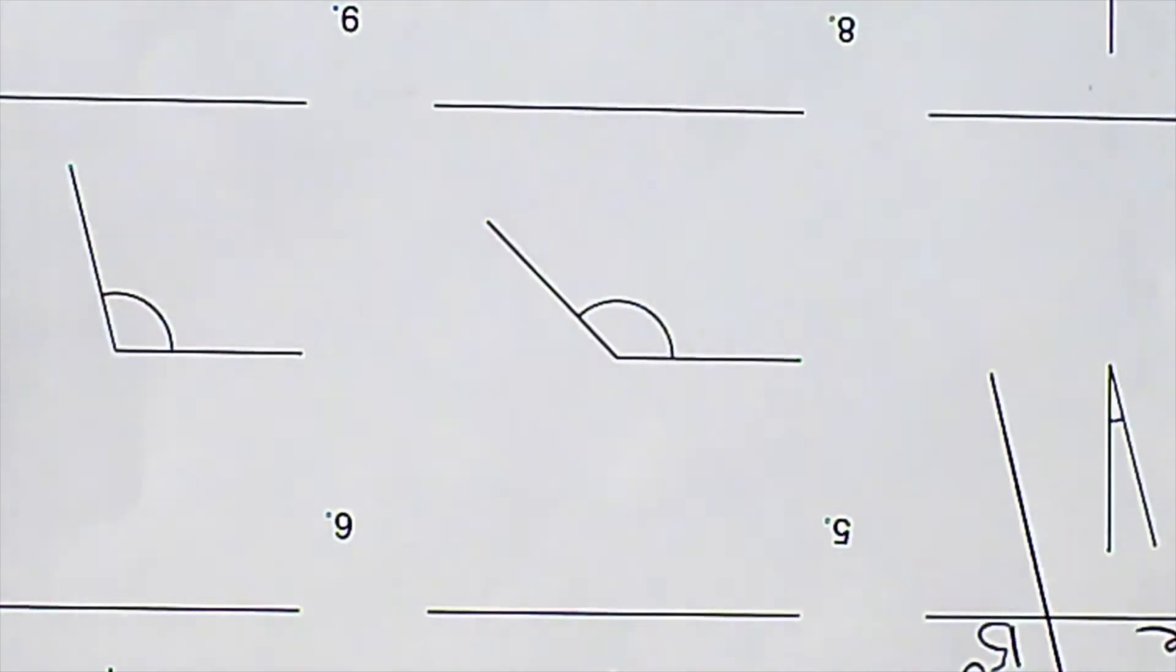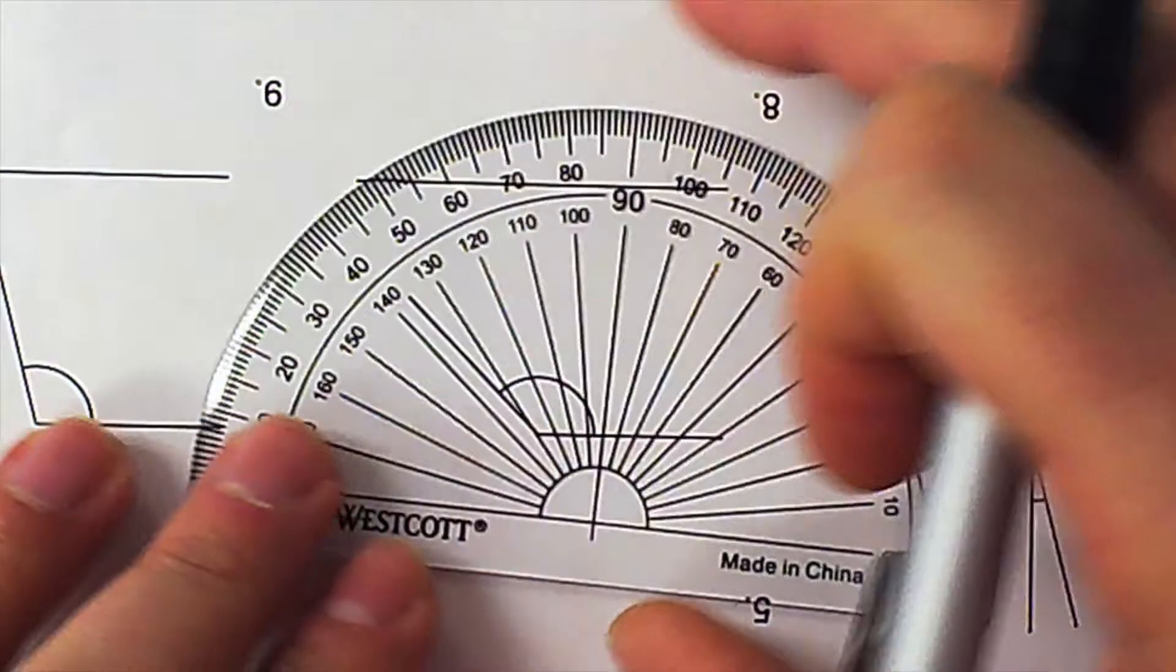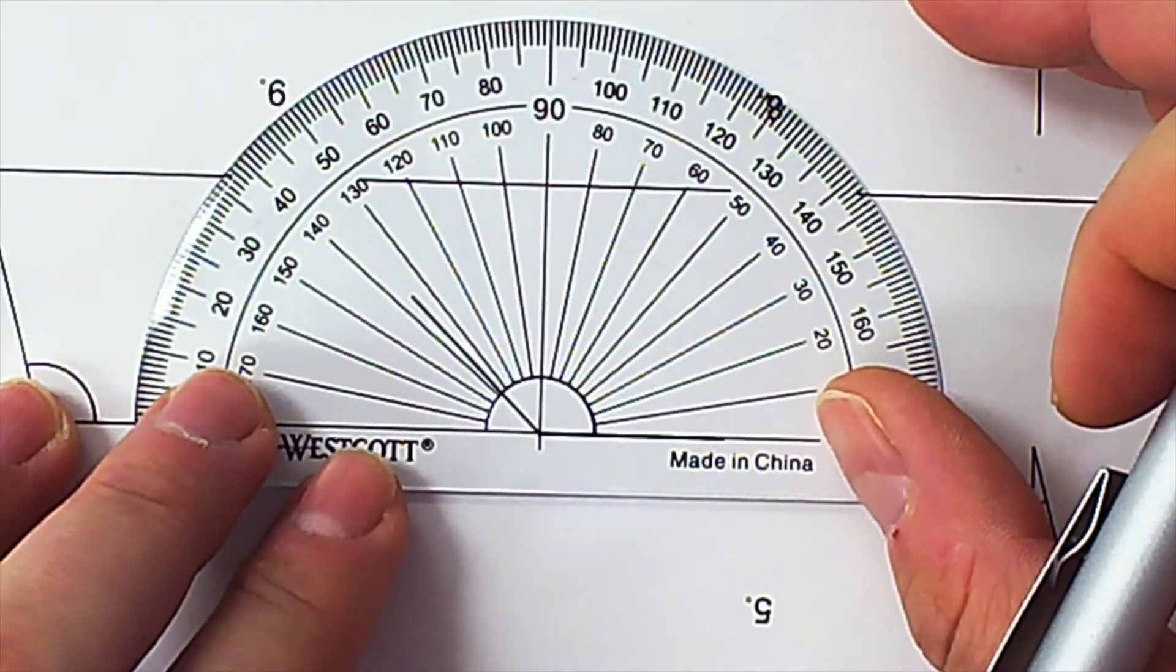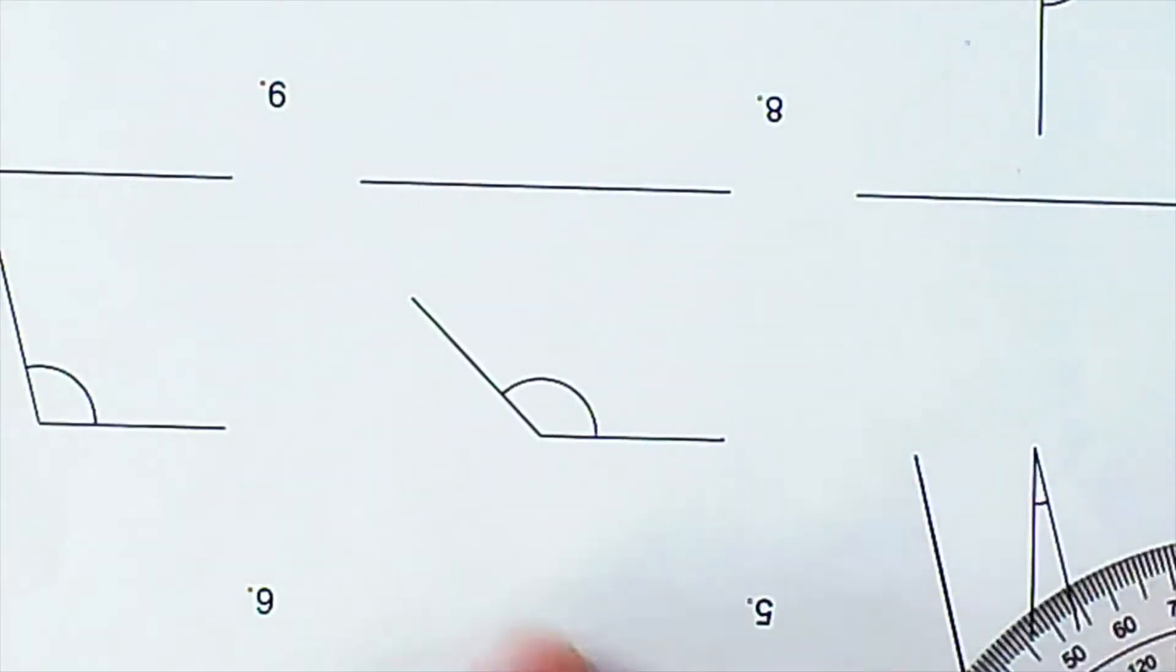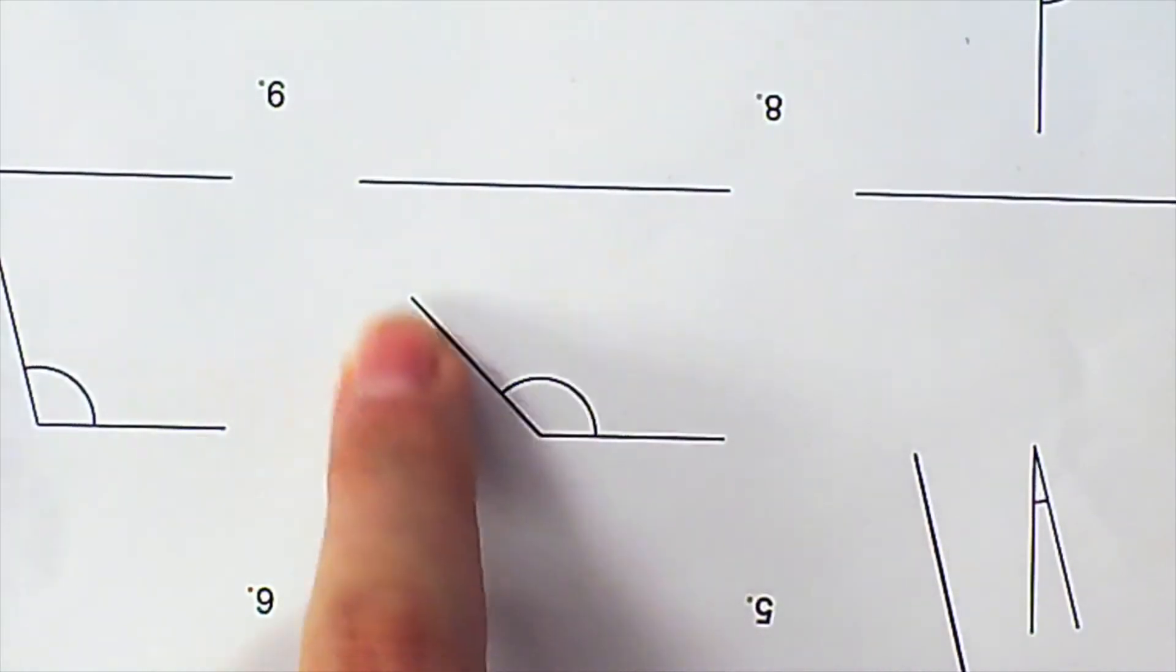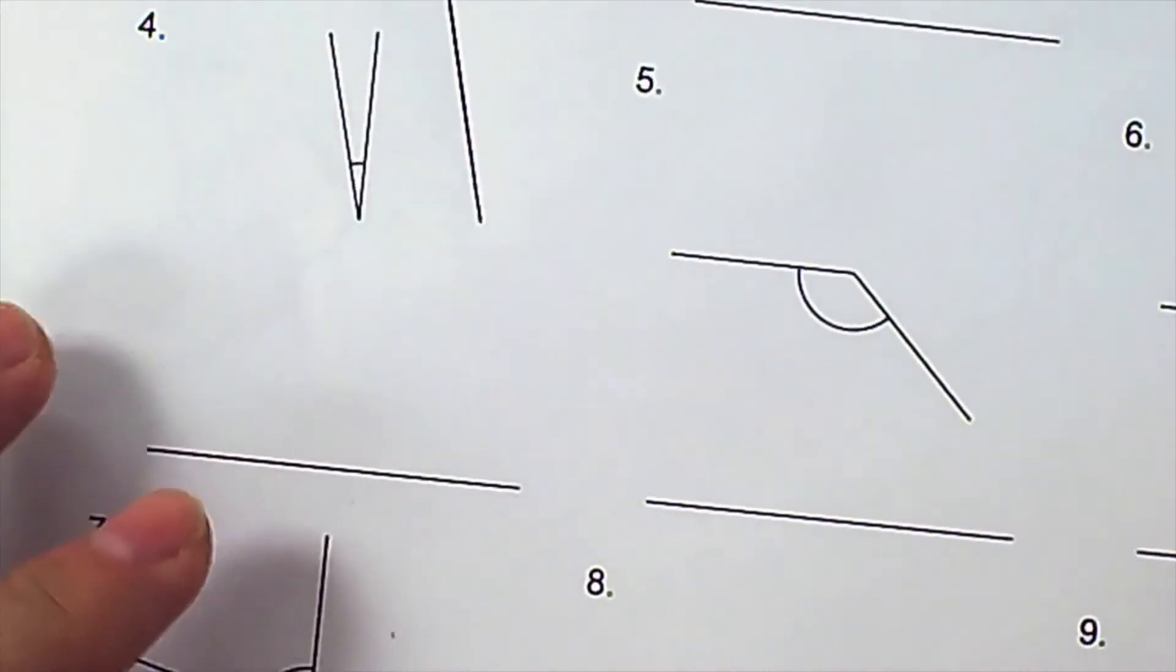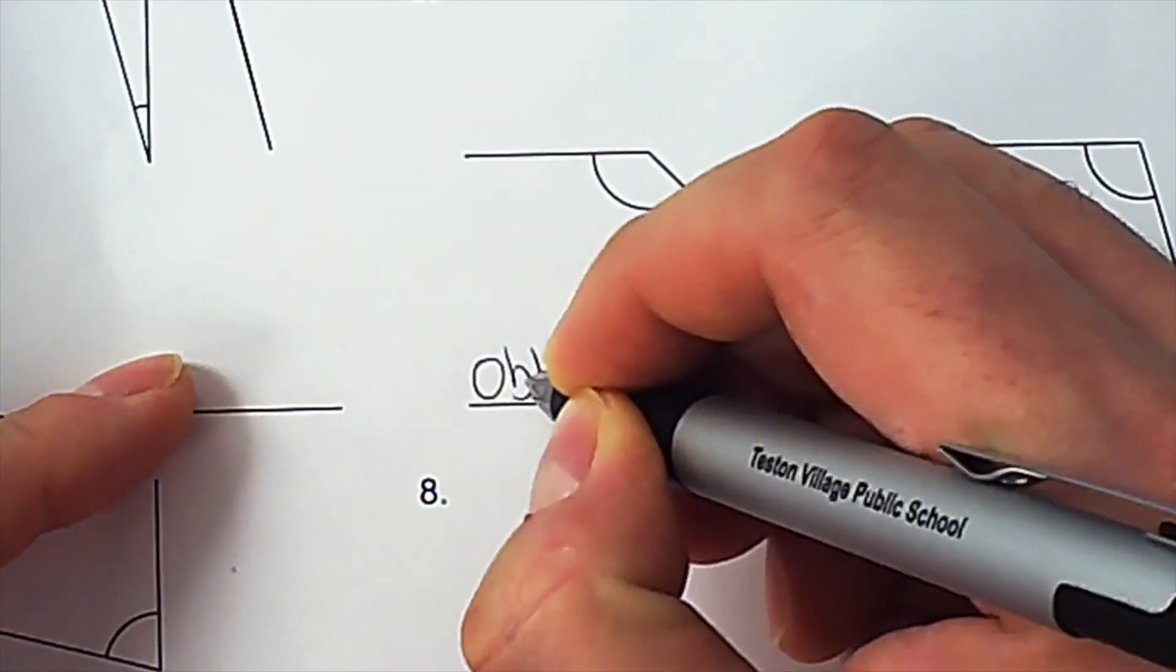There it is. I place the protractor down at the center and there I see the line running through. Well first of all, what kind of angle is this? Is this an acute, obtuse, or right angle? This is an obtuse angle. So I should actually write that down first. I jumped ahead of myself, I got too excited because I want to measure so badly.